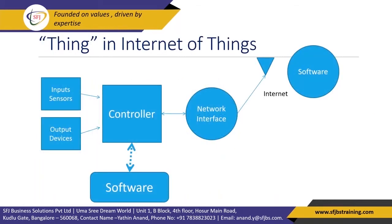What is 'the thing' in IoT? It consists of a controller to which you connect input sensors. Optionally, you can also connect output devices. With a network interface, it can process data with the help of software and post it onto the internet. On the internet, another piece of software does the analysis and provides proper representations, delivering the data via a web page or mobile application.